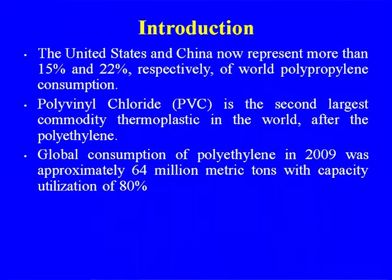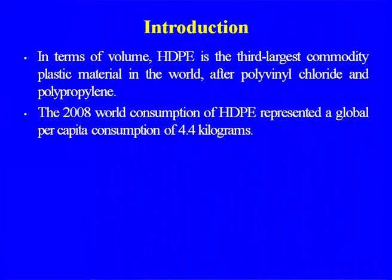Polyvinyl chloride (PVC) is the second largest commodity thermoplastic in the world after polyethylene. However, many of PVC's earlier applications have been replaced by other polymers due to environmental problems — the toxicity of vinyl chloride. Still, PVC growth, particularly in the Middle East petrochemical industry, was associated with production of PVC and large amounts of chlorine, which was also a reason for development of the caustic-chlorine industry. Global consumption of polyethylene in 2009 was approximately 64 million tons with 80 percent capacity utilization.